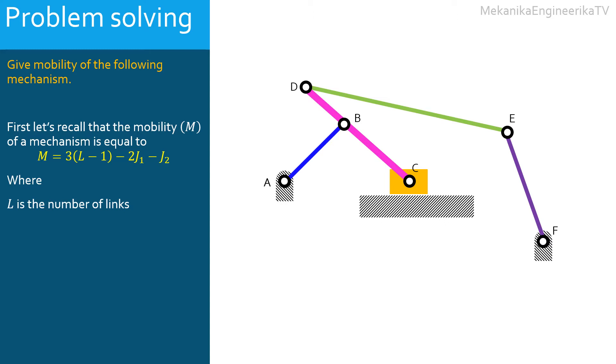Where L is the number of links or mechanical parts in the mechanism. J1 is the number of lower pairs, the number of kinematic pairs that allow 1 degree of freedom each.